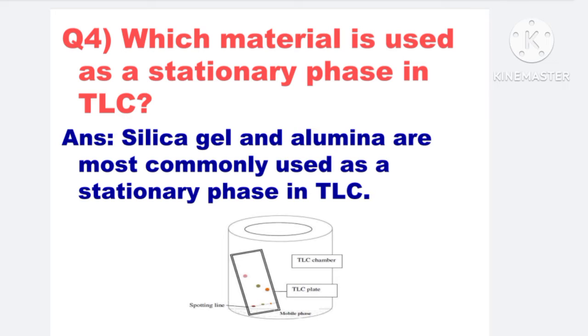Next: Which material is used as a stationary phase in TLC? Silica gel and alumina are most commonly used as a stationary phase in thin layer chromatography.